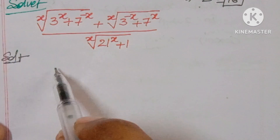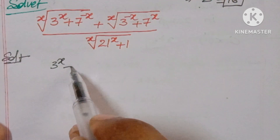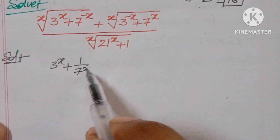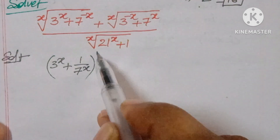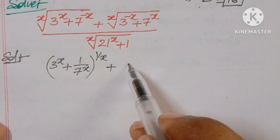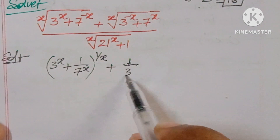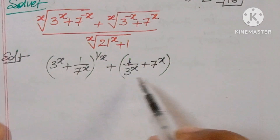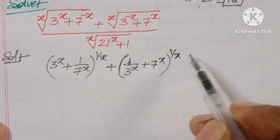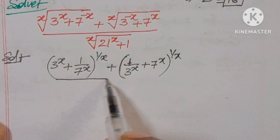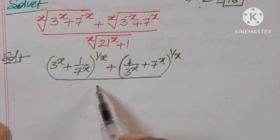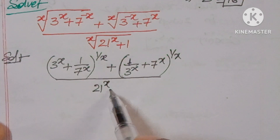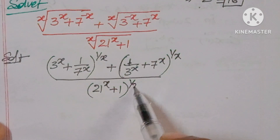If you write this in exponential form: 3 power x plus 1 by 7 power x, whole to the power of 1 by x, plus 1 by 3 power x plus 7 power x, whole to the power of 1 by x, over 21 to the power of x plus 1, whole to the power of 1 by x.